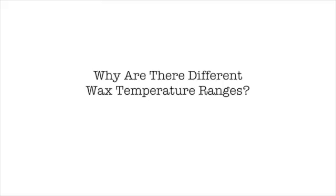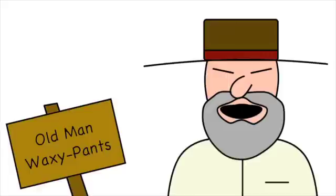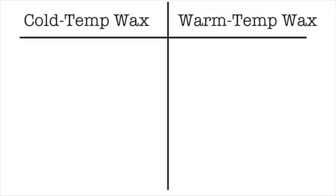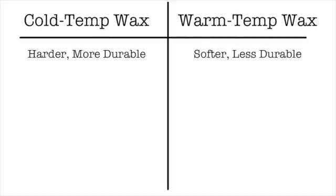So that brings me to the last question: why are there different wax temperature ranges? Cold temperature waxes are harder waxes. Harder waxes are more durable, so really cold, crusty, icy snow doesn't rip it off on the first run. Warm temperature waxes are softer and less durable, so icy snow will tear it up.